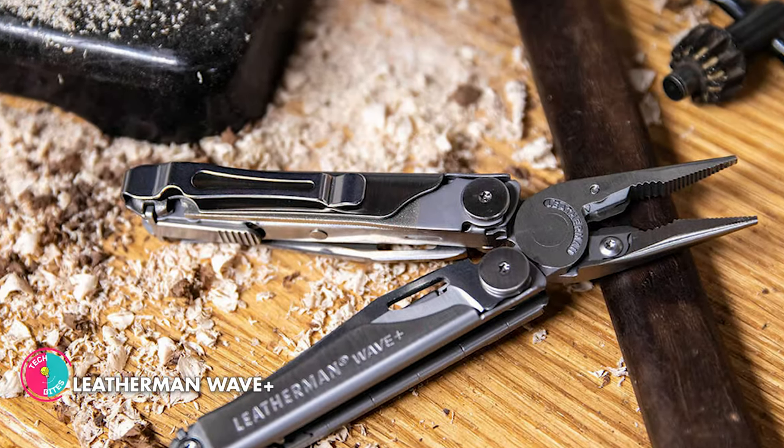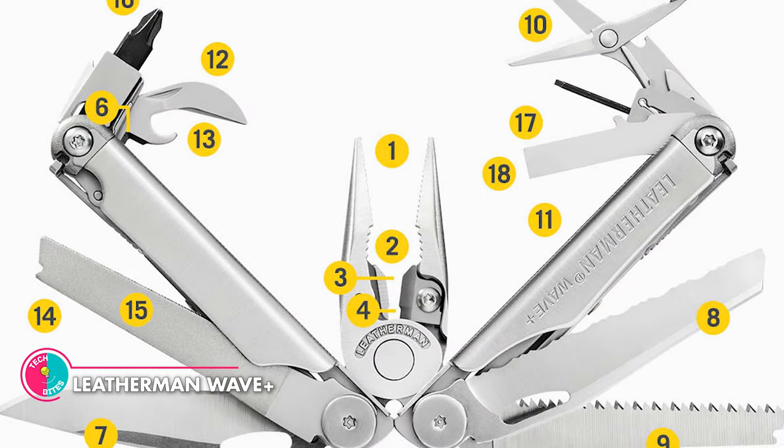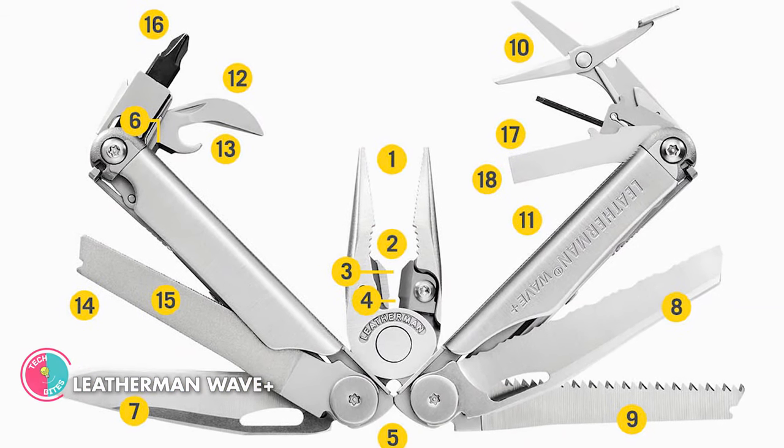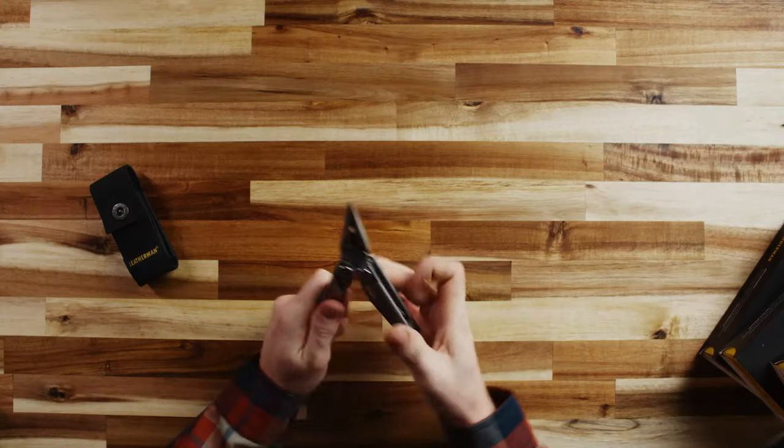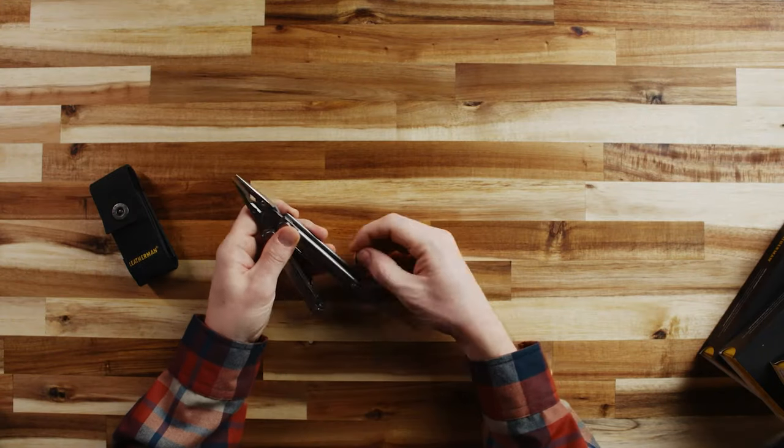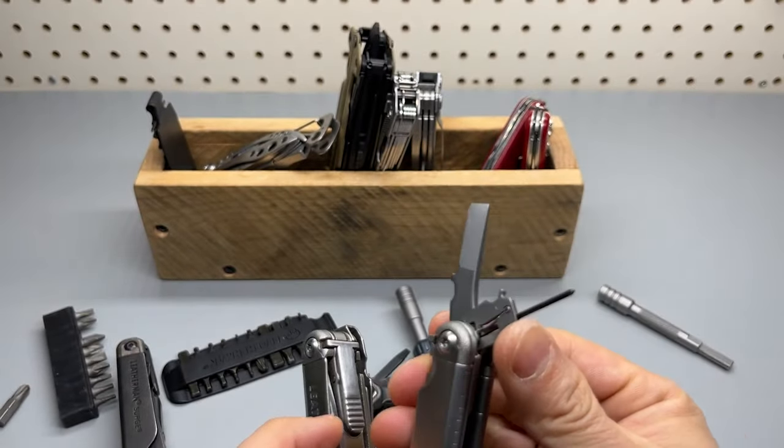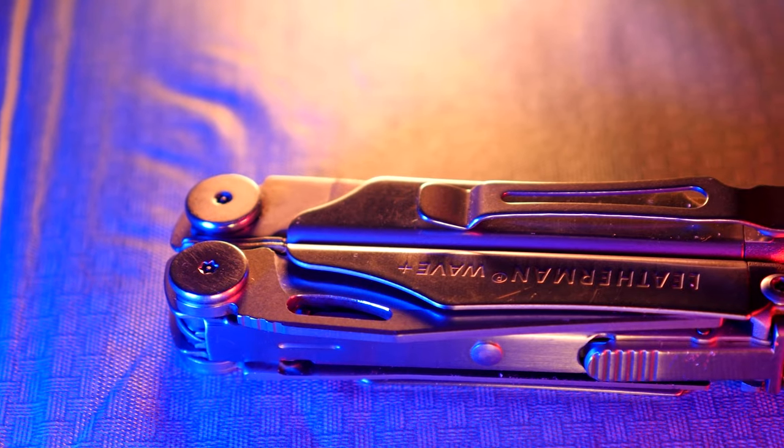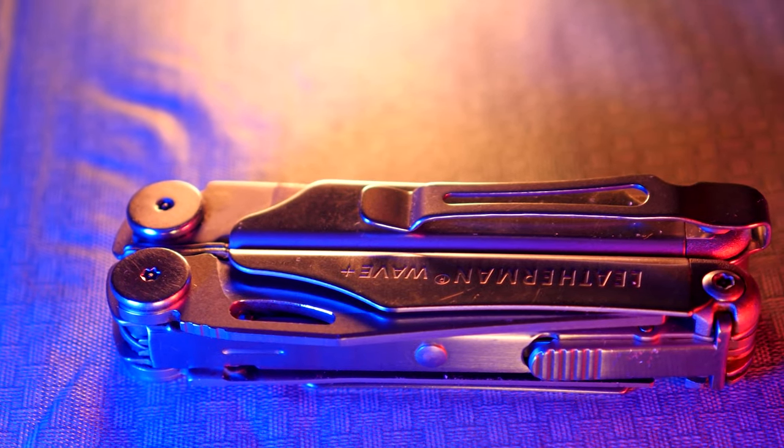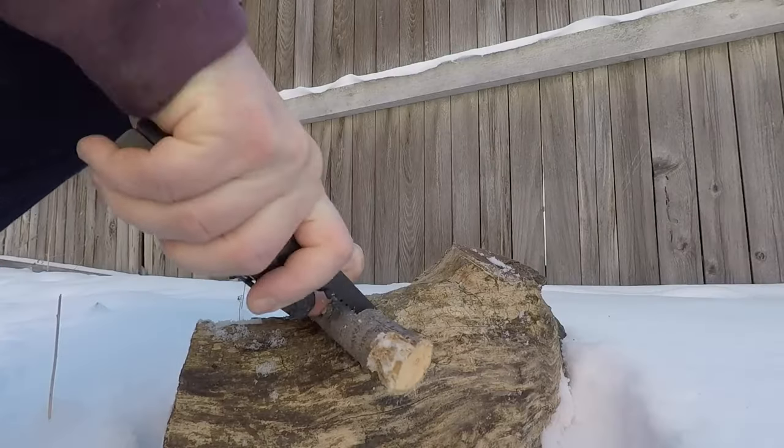Leatherman Wave Plus. This amazing gadget has 18 tools, from pliers to replaceable wire cutters to wire strippers and beyond. This multi-tool has everything you need to tackle any task with ease. And with a range of knives, saws, and spring-action scissors at your disposal, you'll be able to handle even the toughest materials like a pro. But that's not all. This multi-tool includes a ruler, can and bottle openers, files and screwdrivers, making it the ultimate in versatility and convenience.